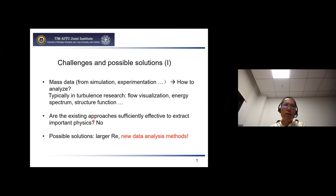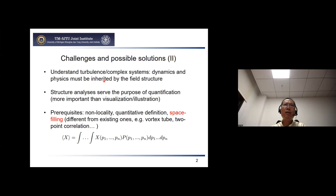To overcome those problems — we produce a lot of data but get no effective outcome — possible solutions are typically to go to larger Reynolds numbers. But our alternative is that we may also develop a new data analysis method, which may be more important. The new method I'm talking about is something to understand the field structure, because we believe that dynamics and physics must be inherited by the field structure.